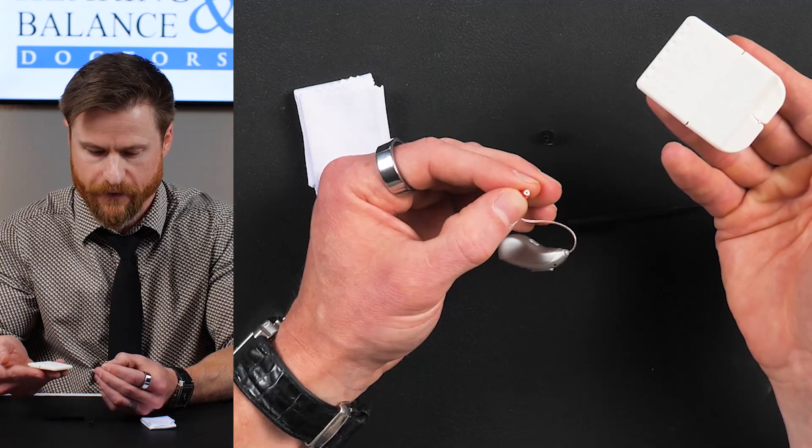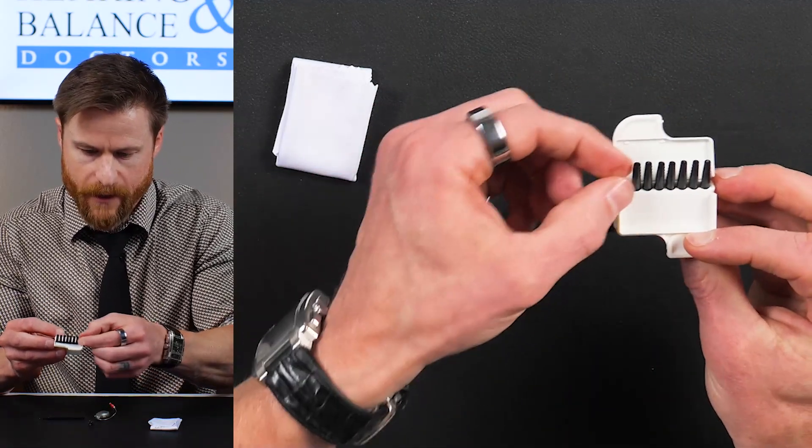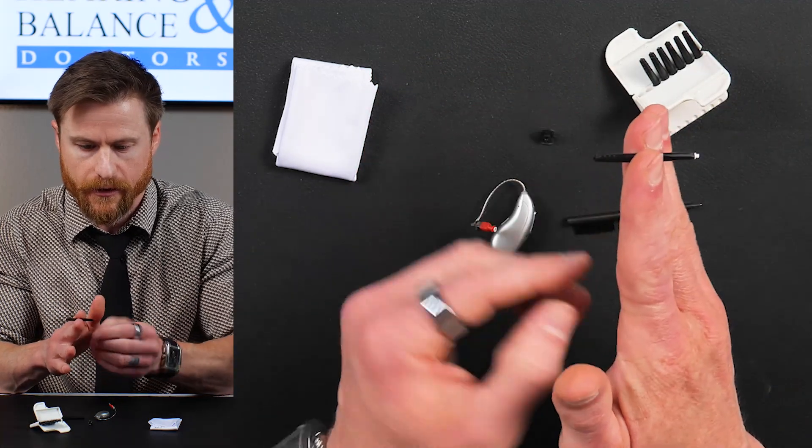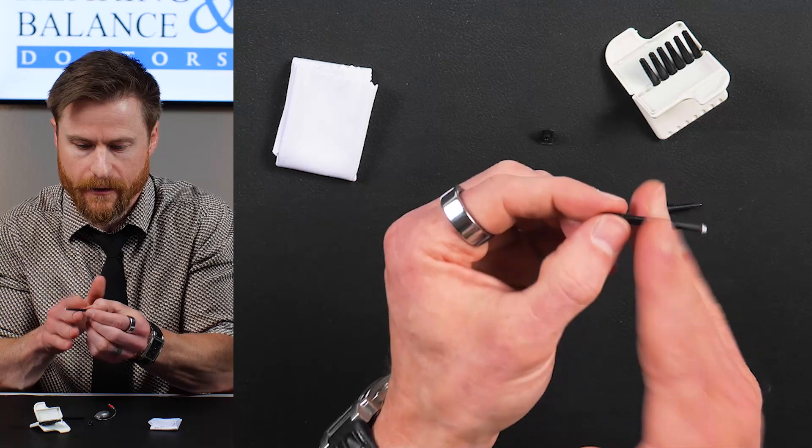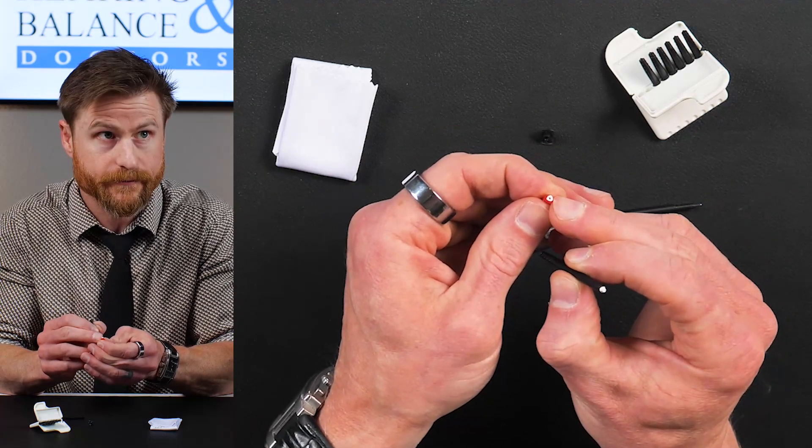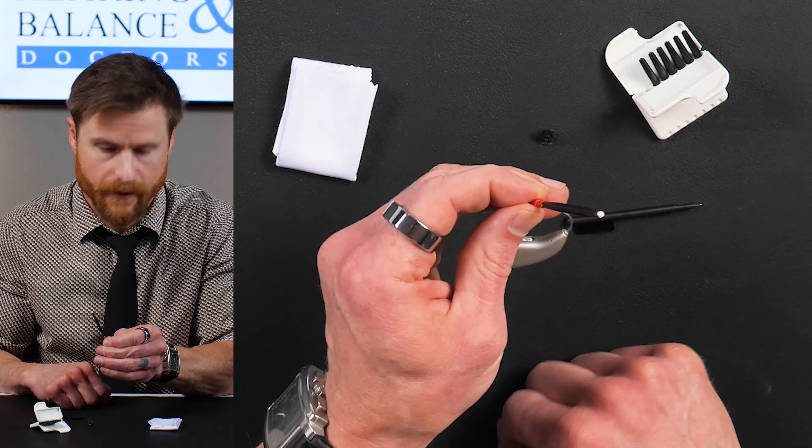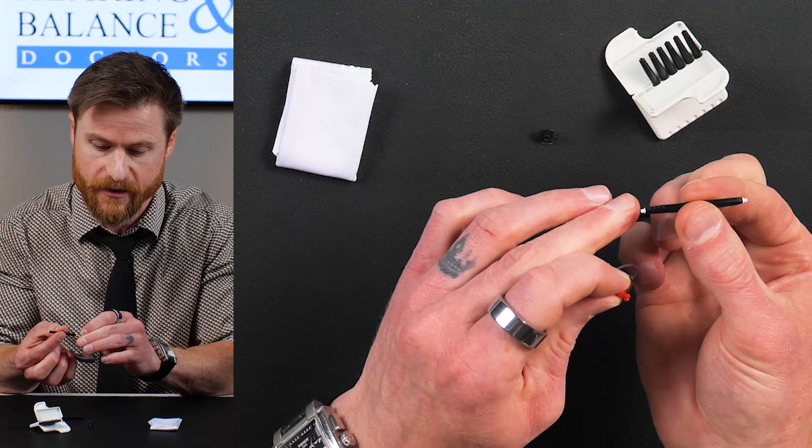So you have these extra filters here. Look, there's a bunch of them. We're going to take one out. Little matchstick. Look, there's a black side and a white side. Let's use the black side to take out the dirty filter. So you've got to push it right in. And then you just pull it out. Dirty filter came right out.